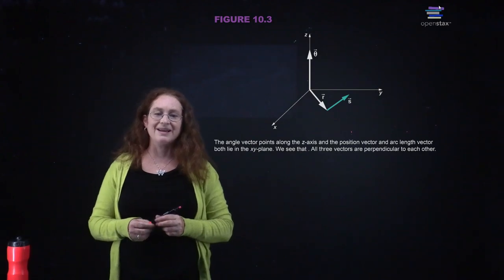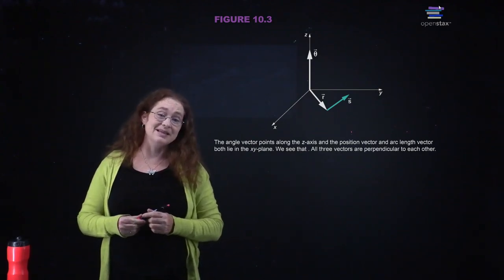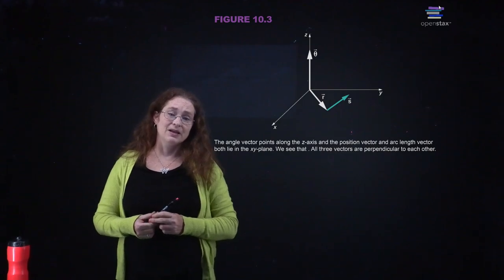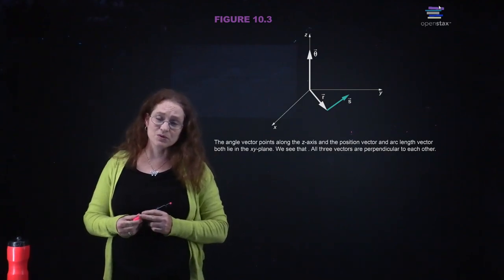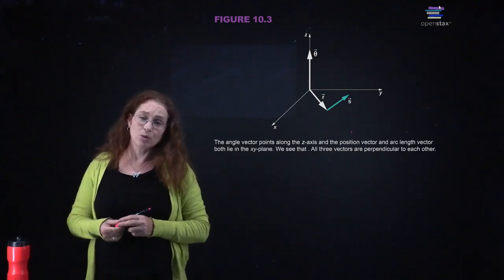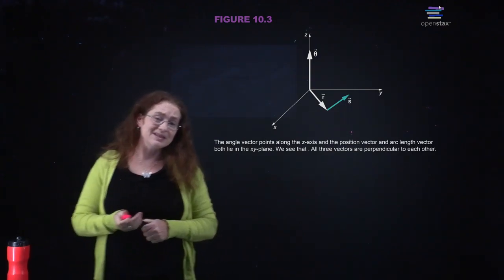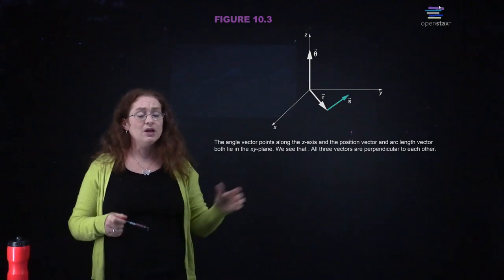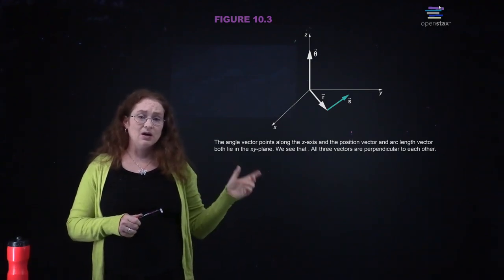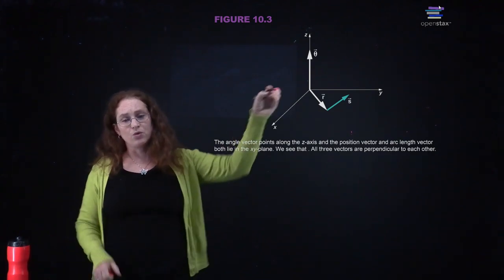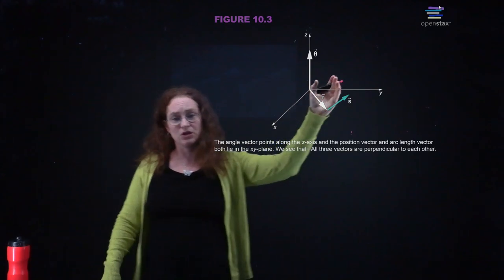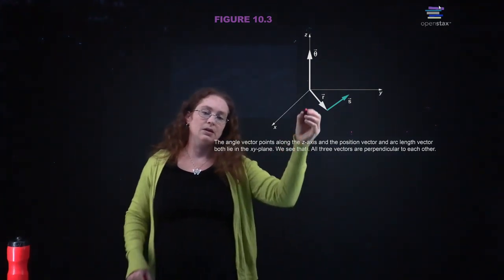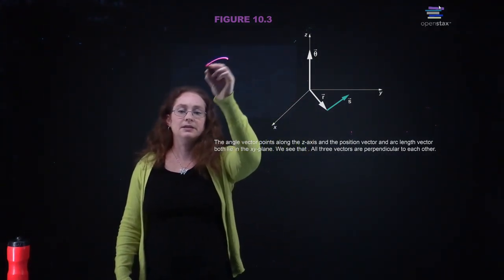The angle vector points along the z-axis, and the position vector and the arc length both lie in the xy-plane. This forms our coordinate system in polar coordinates. In physics, we always need a right-handed orthogonal coordinate system. Your coordinates are r and theta, and then you have a position s along the arc — so r, theta, and s.